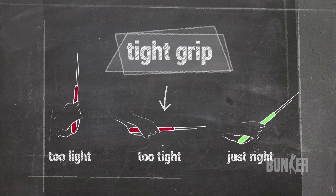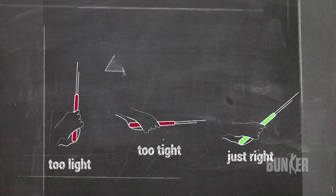Likewise, if your grip is too firm, your body will be rigid, your swing will be stiff and the ball will slice.